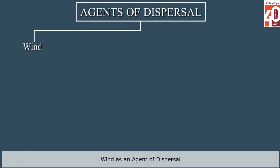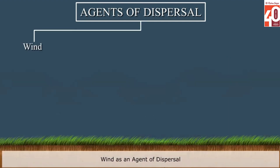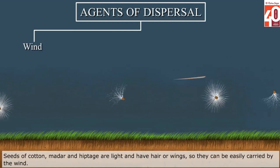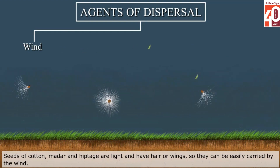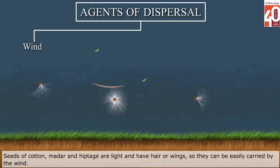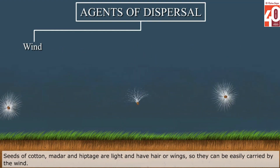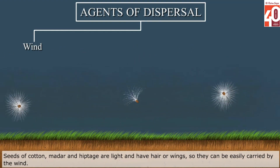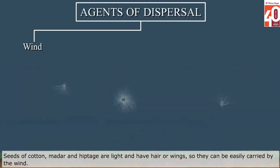Wind as an agent of dispersal: Seeds of cotton, madar and hyptage are light and have hair or wings, so they can be easily carried by the wind.